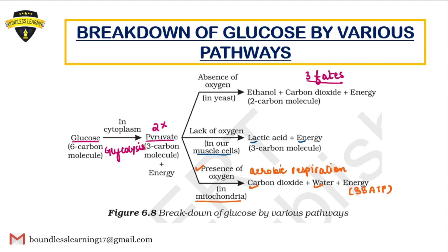The third and last process occurs in conditions of complete absence of oxygen. Anaerobic respiration takes place in yeast, producing ethanol, carbon dioxide, and energy — only 2 ATP of energy.